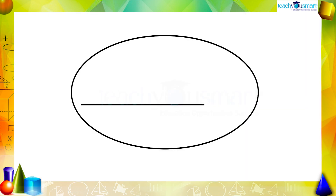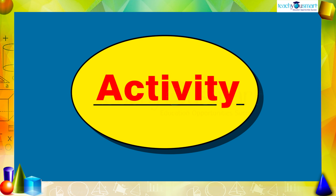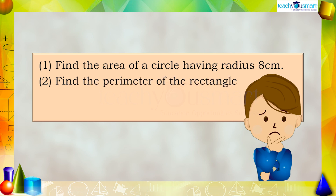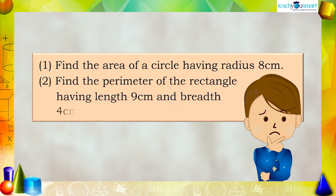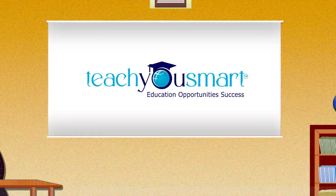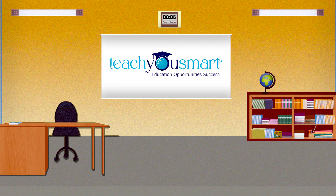Before winding up, let us check how much you understood by doing an activity. One: find the area of a circle having a radius of 8 centimeters. Two: find the perimeter of the rectangle having a length of 9 centimeters and a breadth of 4 centimeters. That's all for now — see you all in the next class.